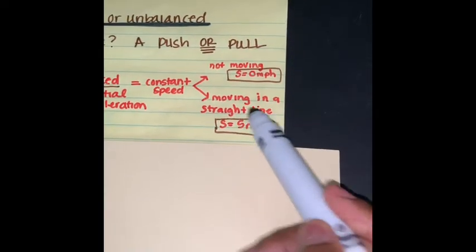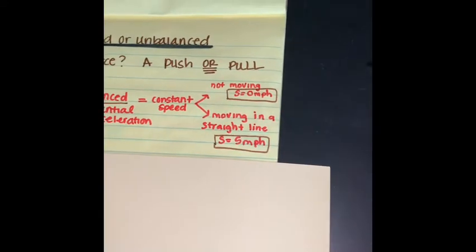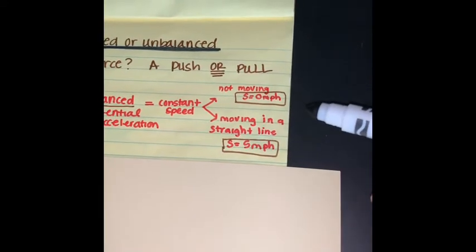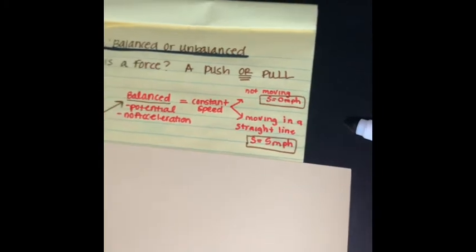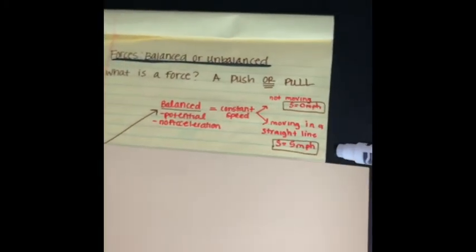Or, it is moving but it is moving in a straight line. There is no curves, no left or right. It is just going straight at a constant speed. For example, 5 miles per hour.